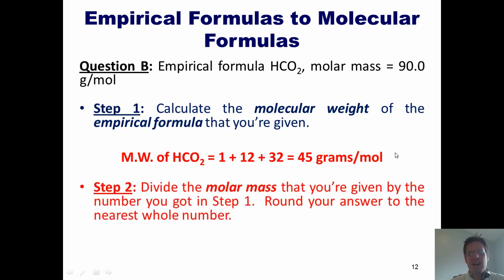Step two. Divide the molar mass that we're given in the problem by the number we just got in step one. Round it to the nearest whole number. So the molar mass given in our problem is 90. The amount we just calculated in step one is 45. So if I take 90 and divide it by 45, I get a nice, neat number of two.